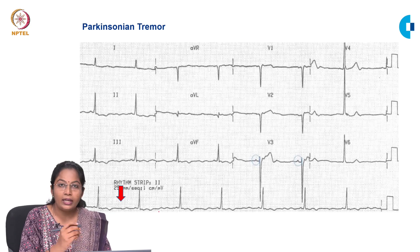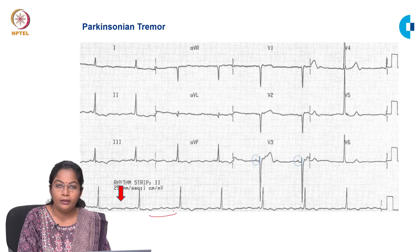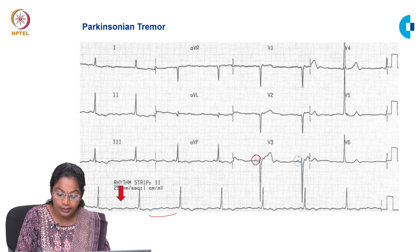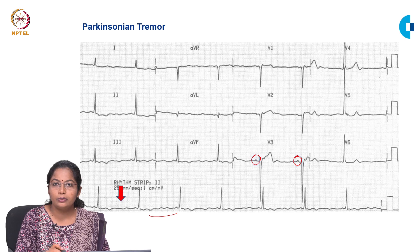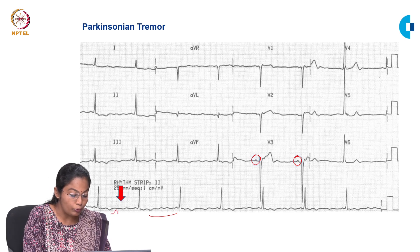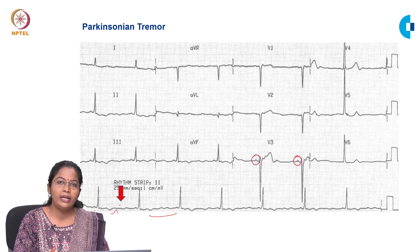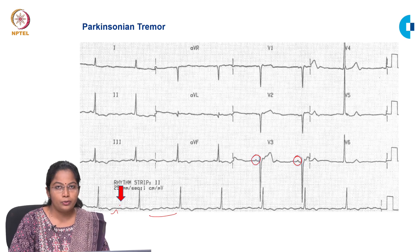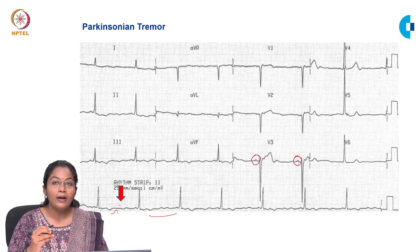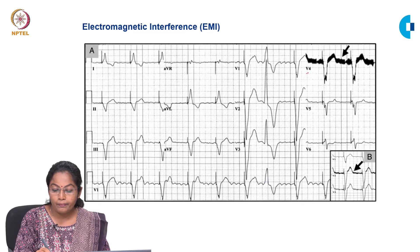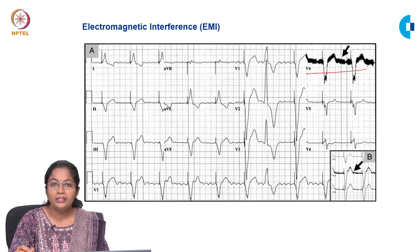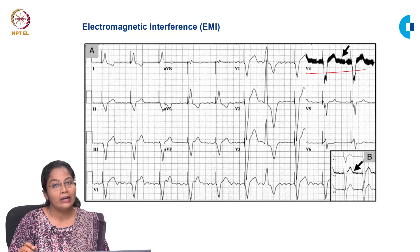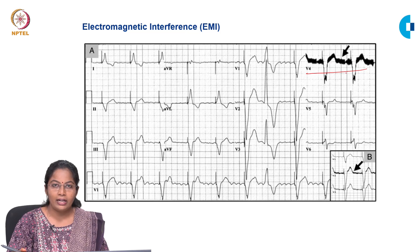In this ECG, at first glance you may think it is atrial fibrillation. But on closer look at the leads, you can see a P wave prior to the QRS, so it is not atrial fibrillation. This kind of abnormal movement is because of muscle tremors, which could be due to anxiety, hyperthyroidism-related tremors, Parkinsonian tremor or shivering. Another artifact is due to electromagnetic interference, caused by having a mobile phone, television or radio nearby. These should all be avoided.